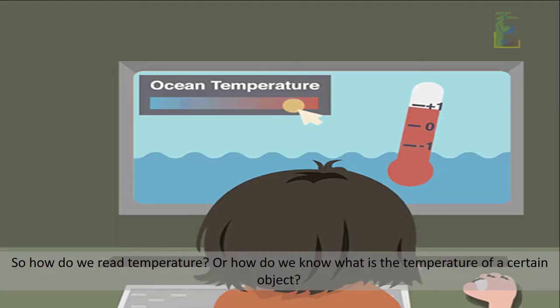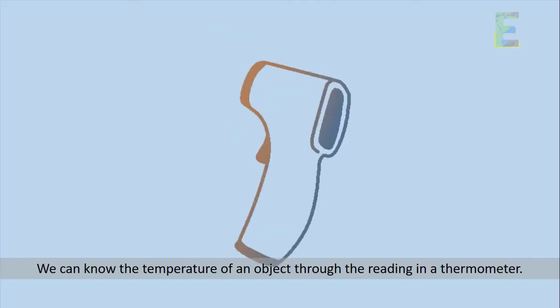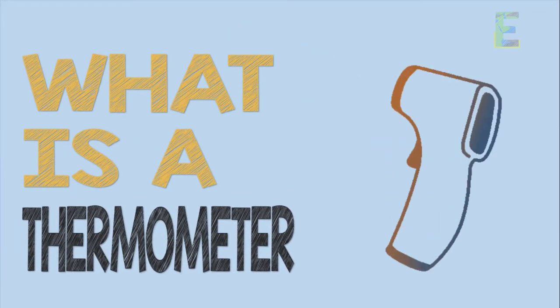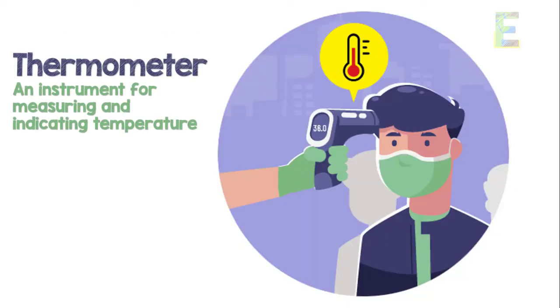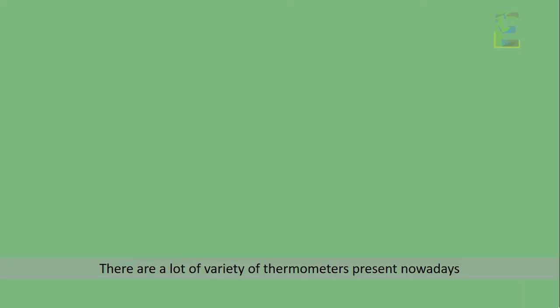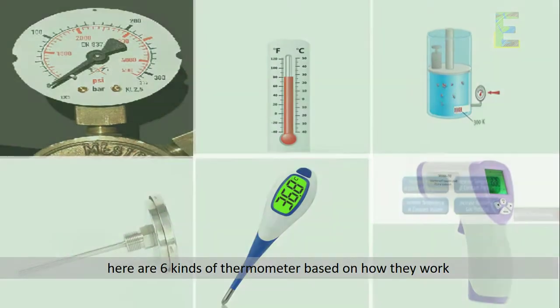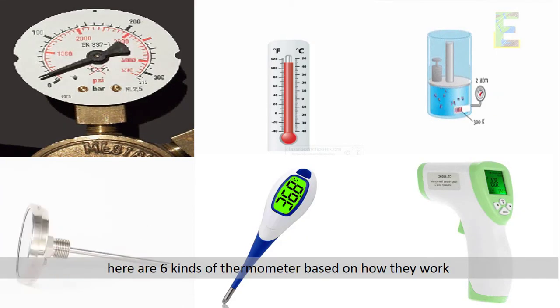So, how do we read temperature? Or how do we know what is the temperature of a certain object? We can know the temperature of an object through the reading in a thermometer. So, what is a thermometer? A thermometer is an instrument for measuring and indicating temperature. There are a lot of variety of thermometers present nowadays.